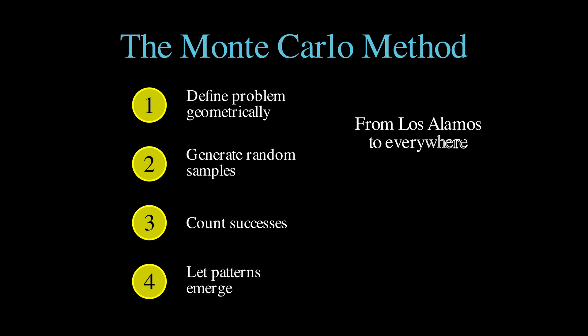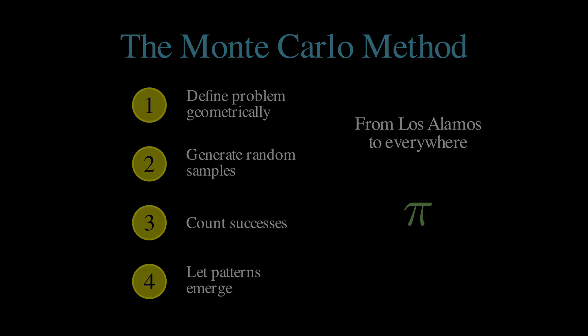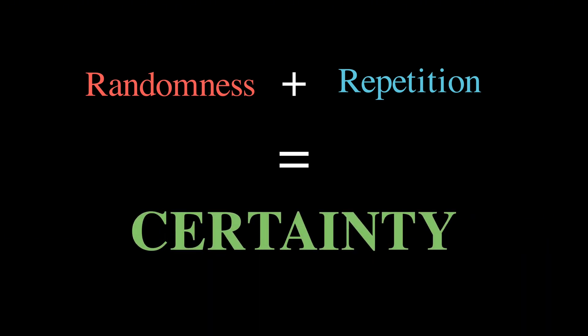What started at Los Alamos National Laboratory during the Manhattan Project as a way to model neutron diffusion has become one of the most versatile problem-solving tools we have, and here's the paradox that makes it all work: randomness plus repetition equals certainty. And that's basically it for this video. Thanks for watching, and I will see you in the next one. Bye-bye!